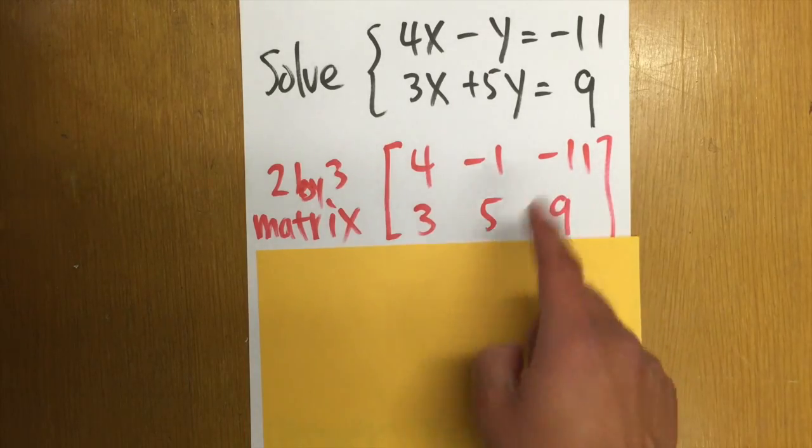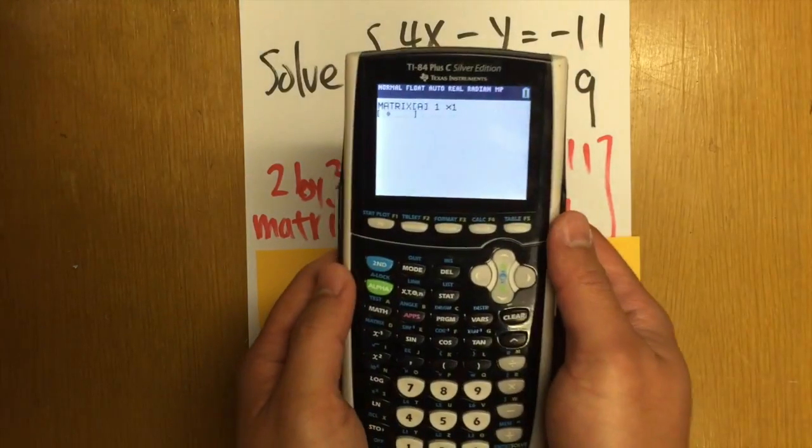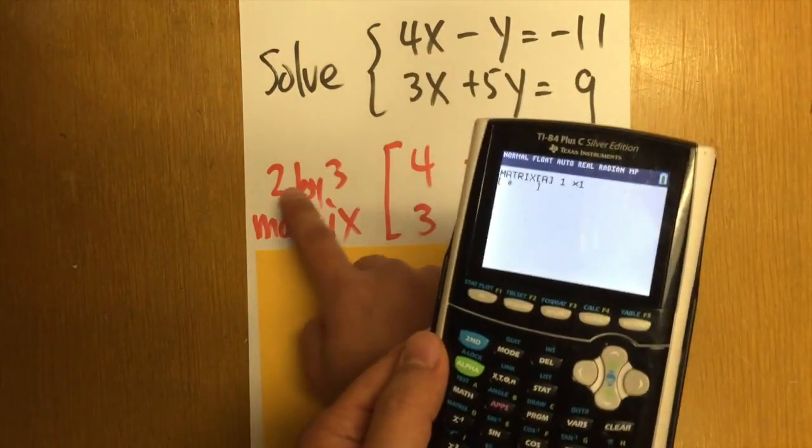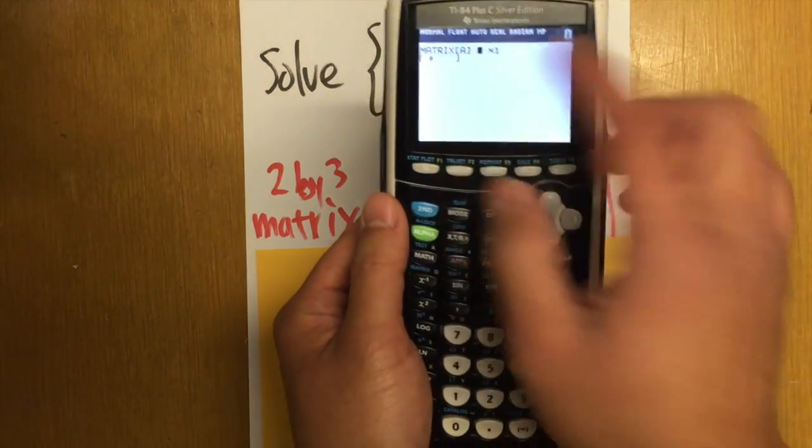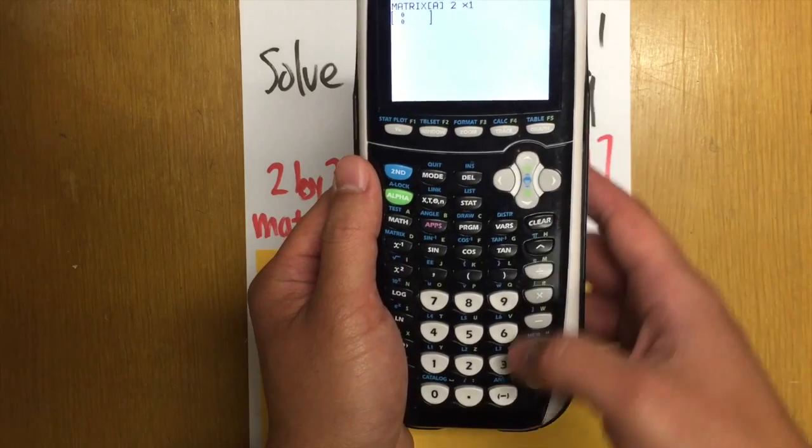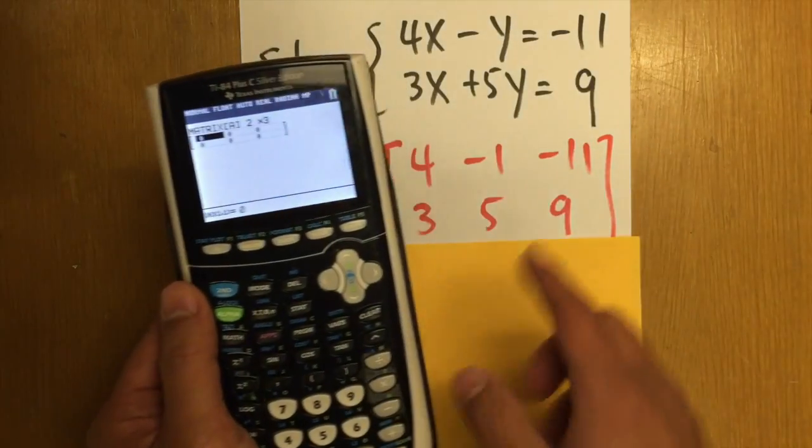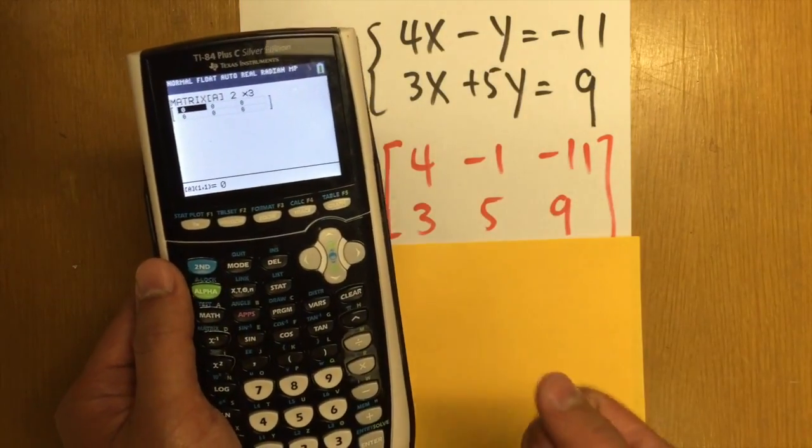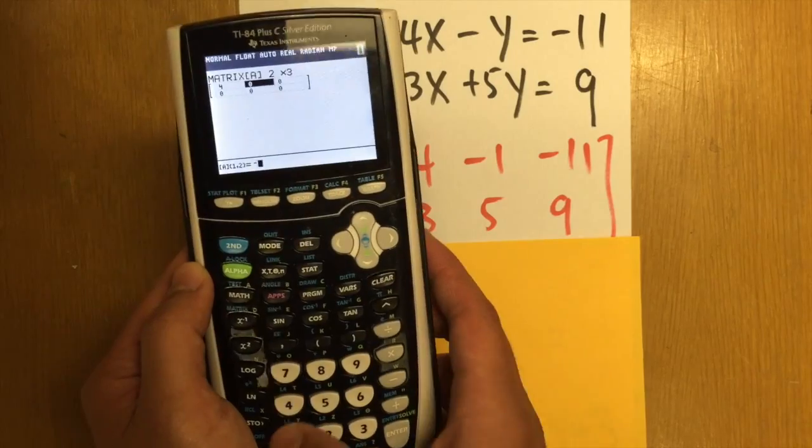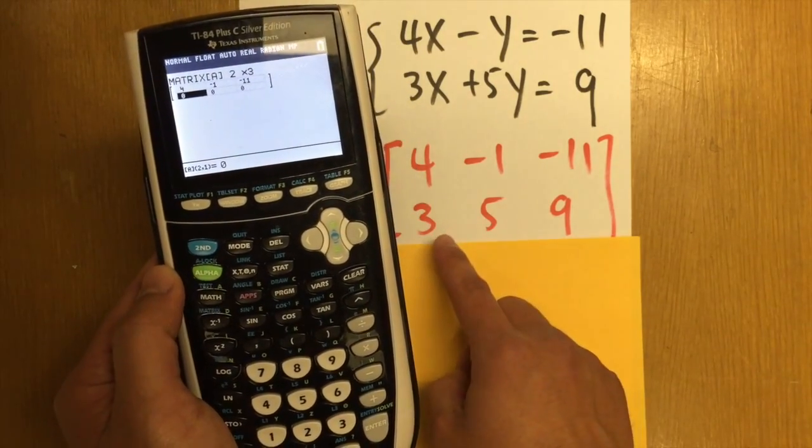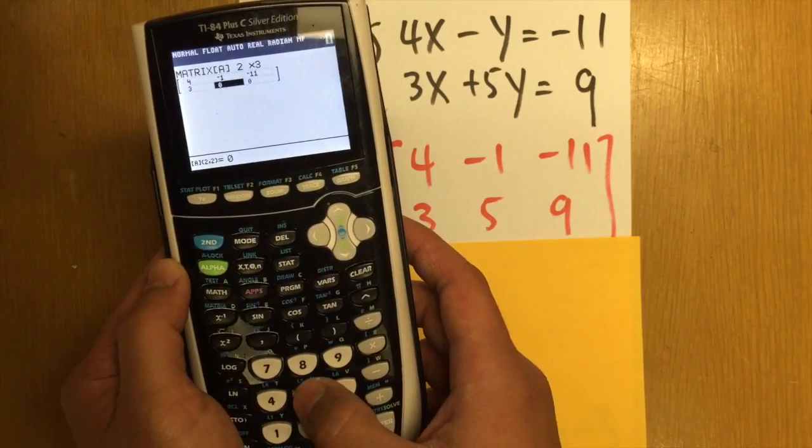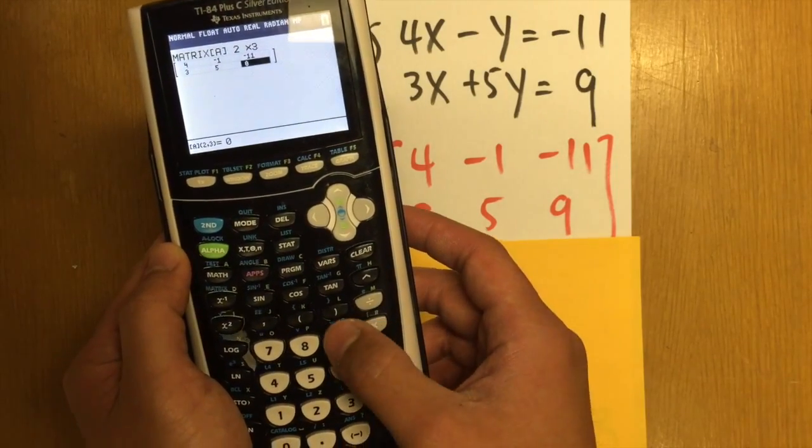This is the matrix that we have to enter onto matrix A. Well, it's a 2 by 3 because we have two rows and three columns. So I just have to put right here 2 by 3. And let's just enter these numbers onto the calculator. 4, negative 1, negative 11. And then for the second row, we will have 3, 5, and then 9.